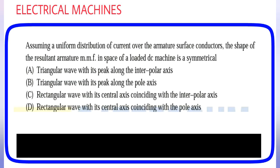Assuming a uniform distribution of current over the armature surface conductors, the shape of the resultant armature MMF in space of a loaded DC machine is: (A) Triangular wave with its peak along the interpolar axis, (B) Triangular wave with its peak along the pole axis, (C) Rectangular wave with its central axis coinciding with the interpolar axis, (D) Rectangular wave with its central axis coinciding with the pole axis. Answer is option A, triangular wave with its peak along the interpolar axis.